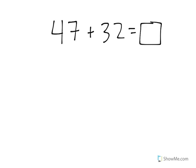In this video, we're going to look at how to add two two-digit numbers together. We have 47 plus 32.